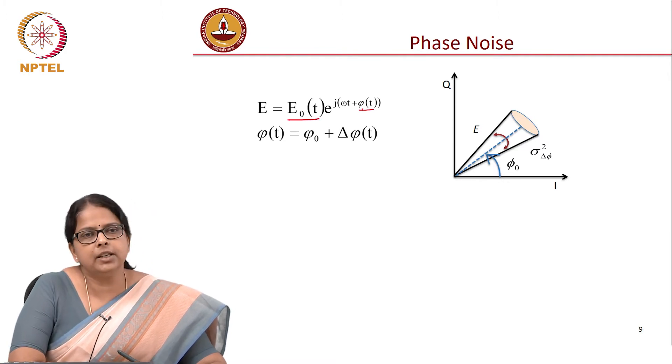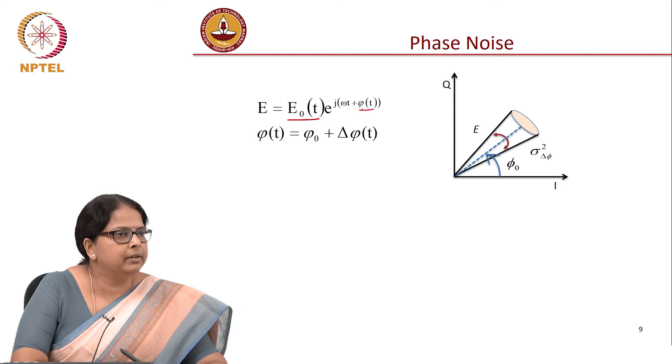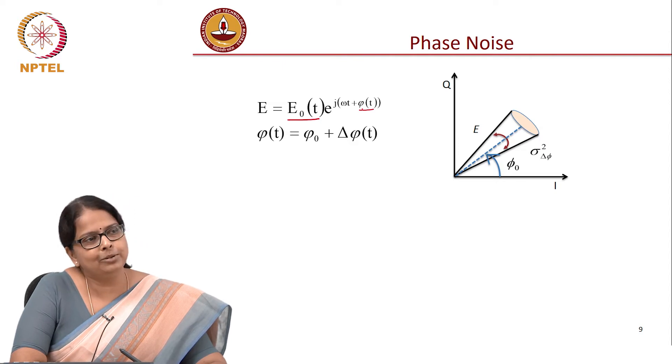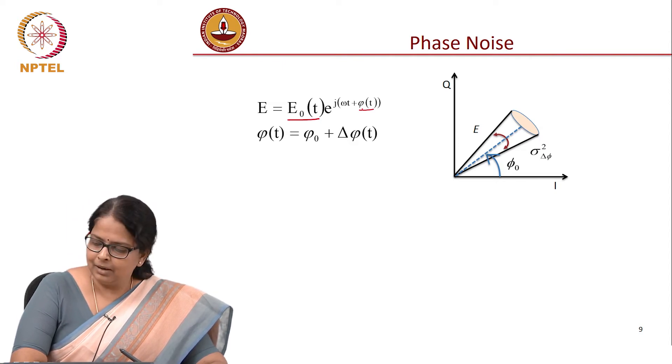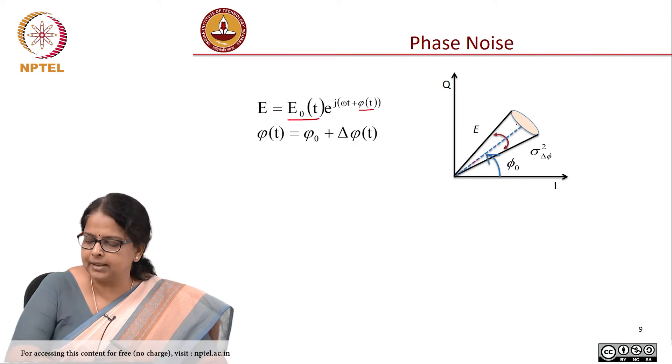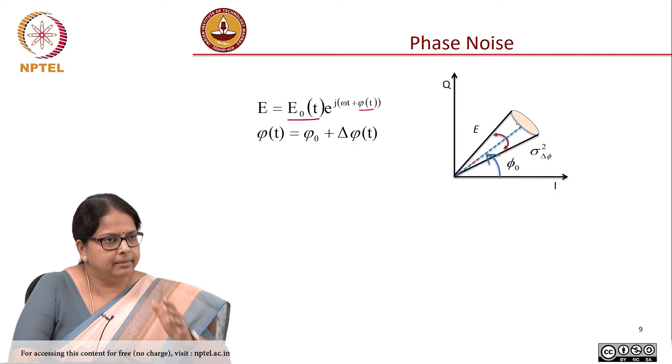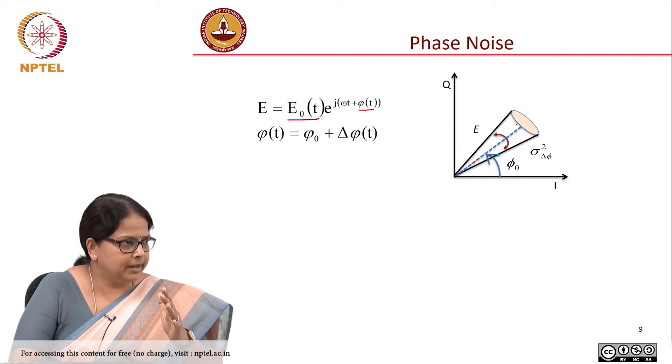So, the immediate consequence is that in your constellation diagram, remember we talked about constellation diagram because our information is going to get encoded in amplitude as well as in phase. Let us say this dashed line is representing the phasor, the phasor part,